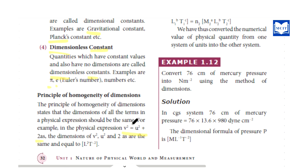Consider this equation. The left-hand side has a certain dimension, and the right-hand side terms must have the same dimension. The left-hand side must equal the right-hand side in terms of dimensions — they will be the same and equal. This is the principle of homogeneity.